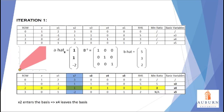Let's watch the inverse B matrix throughout each iteration. Also, the B-hat column is the same as the right-hand side column. We can see from the graph that the iteration is being performed at the origin where X1 and X2 are equal to zero, which is correct because X1 and X2 are non-basic variables for this first iteration.